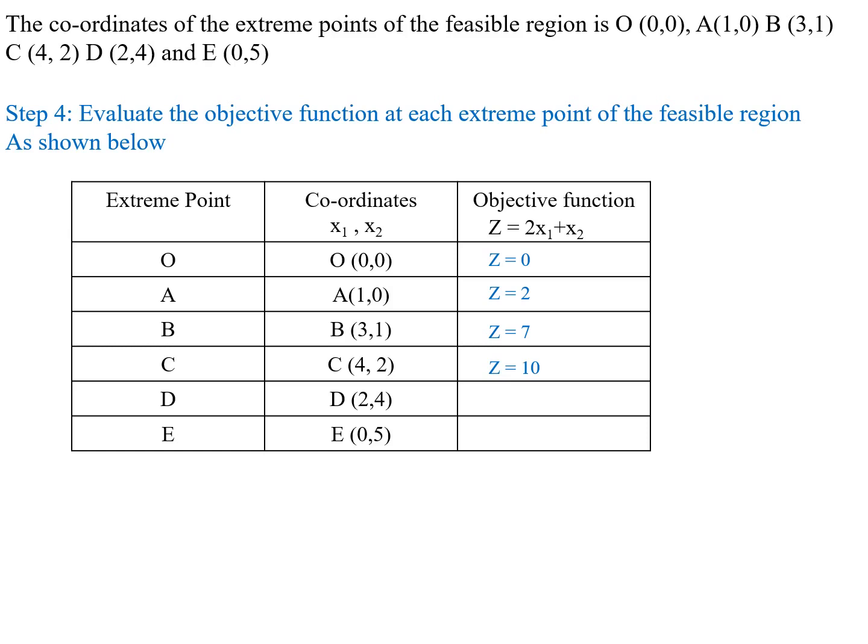For extreme point D with coordinates (2, 4): x1 equal to 2 and x2 equal to 4. Substituting in the objective function gives Z equal to 8. For extreme point E with coordinates (0, 5): x1 equal to 0 and x2 equal to 5. Substituting in the objective function gives Z equal to 5.